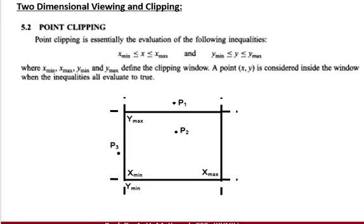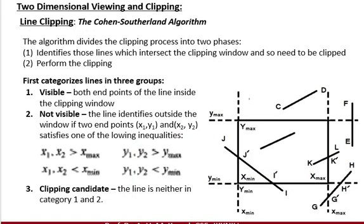For P1, the y value is not in range, and for P3, the x value is not in range. That is why P3 and P1 are outside the selected region. If we clip this, we will get only P2; P1 and P3 will be discarded. This is known as point clipping.